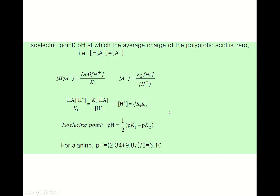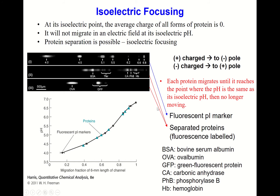Now let's consider isoelectric focusing. At its isoelectric point, the average charge of all forms of a protein is zero — that's very important. At the isoelectric pH, the protein will not migrate in an electric field. This property makes protein separation possible, a technique called isoelectric focusing.